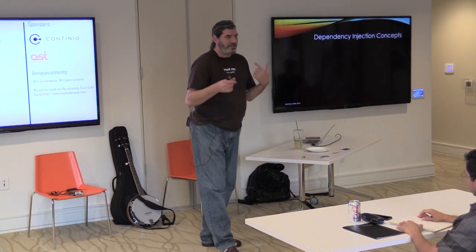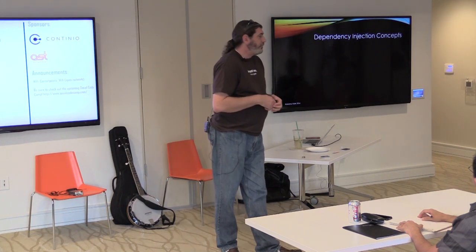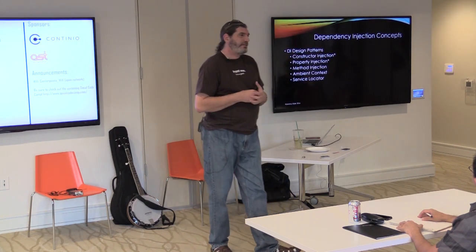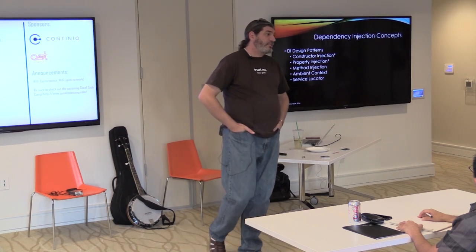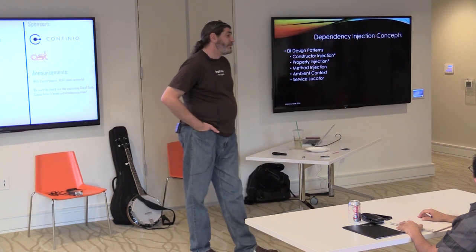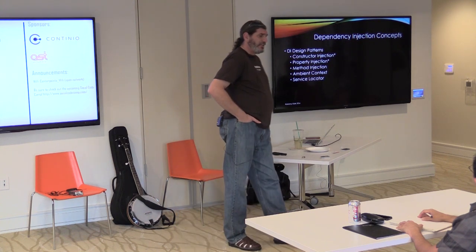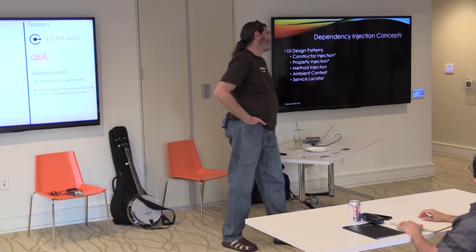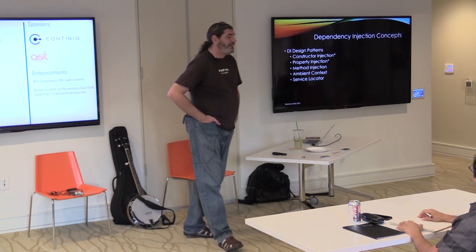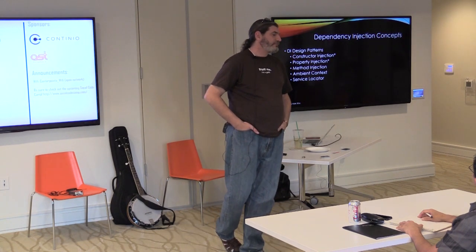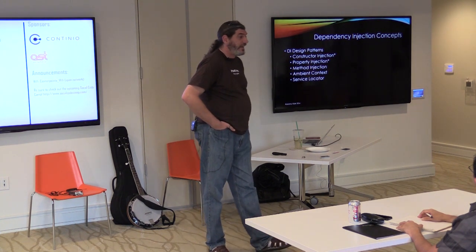When we talk about dependency injection, there are a lot of concepts because there's more than one way of doing this. Tonight we're specifically looking at constructor injection and property injection, which are probably the most common, easiest to use, and what I lean towards whenever possible. If those don't work for your situation, there are other patterns including method injection, ambient context, service locator, and others. The Mark Seaman book is an excellent resource for a deep dive on these different patterns.